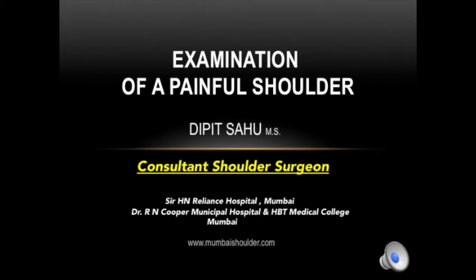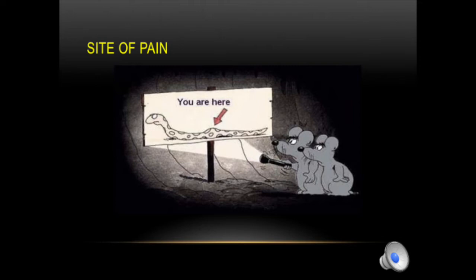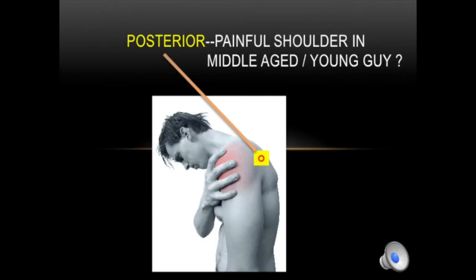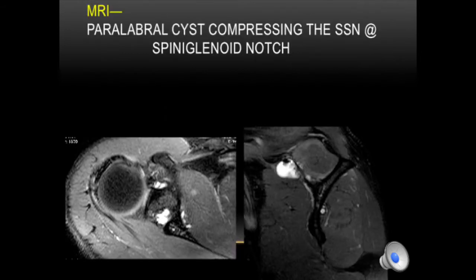Let's learn how to examine a painful shoulder. We go through inspection, special tests, and try to see where the pain is coming from. The most important point in the history is where is the pain. For example, if the pain is localized in a middle-aged or young guy at some particular spot, an MRI often shows a cyst in the spinoglenoid notch — these are paralabral cysts which impinge at the notch and compress the suprascapular nerve.